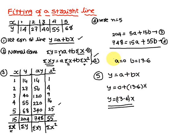In this problem, there are five main steps. First: write the straight line equation. Second: write the normal equations. Third: prepare the table. Fourth: form the equations using the table values. Fifth: solve the equations to get the best-fit straight line.